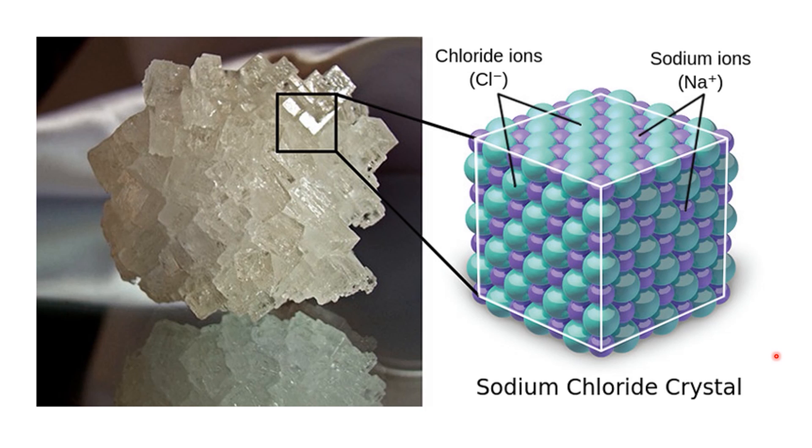And because this electrostatic attraction is non-directional, each ion pulls in several oppositely charged ions from every direction. This creates a regular, repeating pattern called a crystal lattice. It's this structure that gives ionic compounds like sodium chloride their distinct properties.